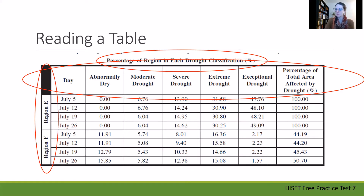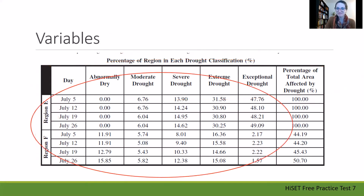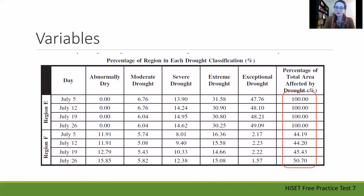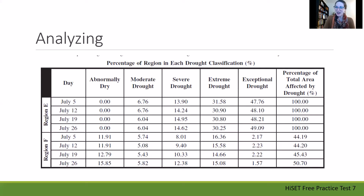That helps us organize how the information is put together and helps us make comparisons. If we want to compare the two regions on July 5th, we can look at those specific lines. The specifics — whether that's the day or the percentages — are what we need to pay attention to, including similarities or differences in different parts of the table, as well as the total line at the bottom. We'll analyze this table to interpret it and answer questions that might appear on the test.